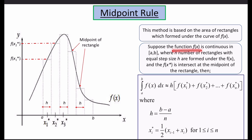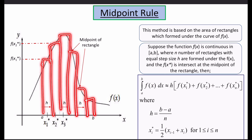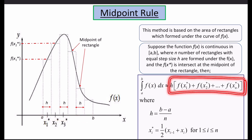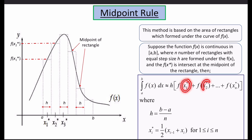Suppose the function f(x) is continuous on [a, b], where n is the number of rectangles with equal step size h. We have n number of rectangles — for this example, 6 rectangles with step size h, so each rectangle has width h. The integration is approximately given by this formula: h multiplied by f(x1*) + f(x2*) + ... + f(xn*), where the star values are the midpoints. That's why this method is called the midpoint rule.